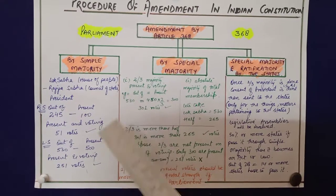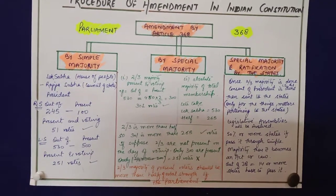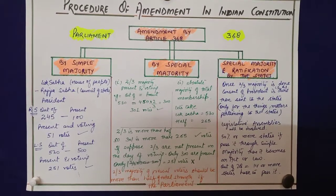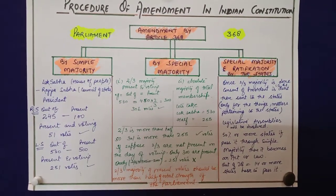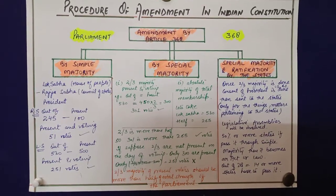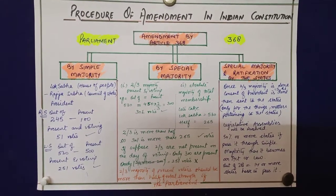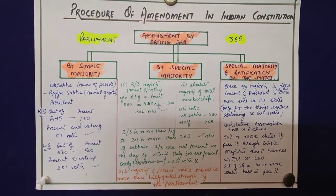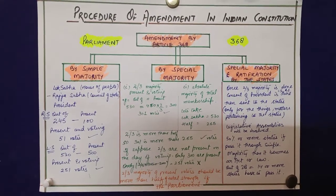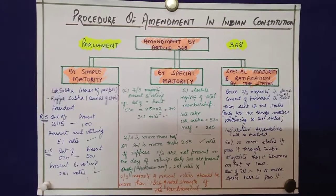The matters amended by simple majority are different, the matters amended using special majority are different, and similarly, the matters pertaining to the states — which have the involvement of the states — are amended through special majority and ratification by the states. I hope all these methods and procedures are clear to each one of you. Thank you.